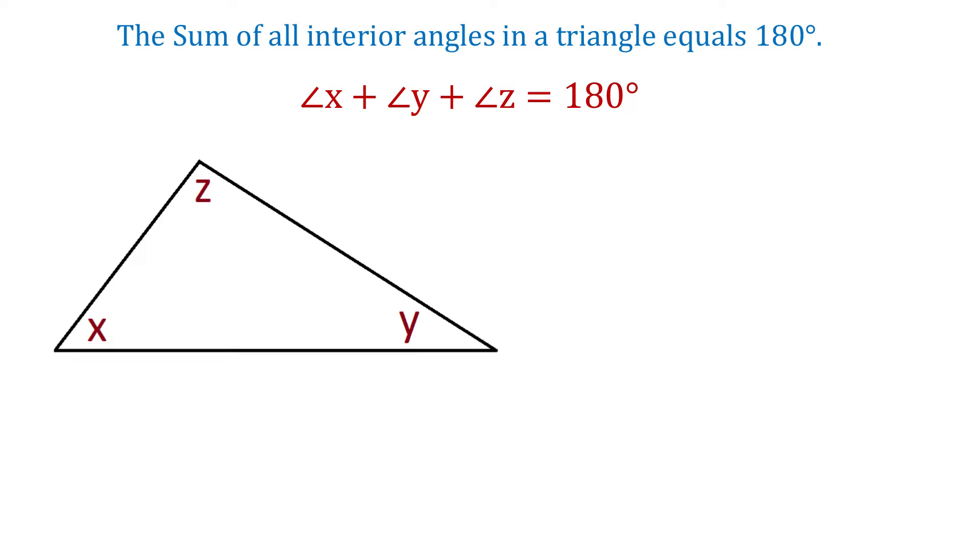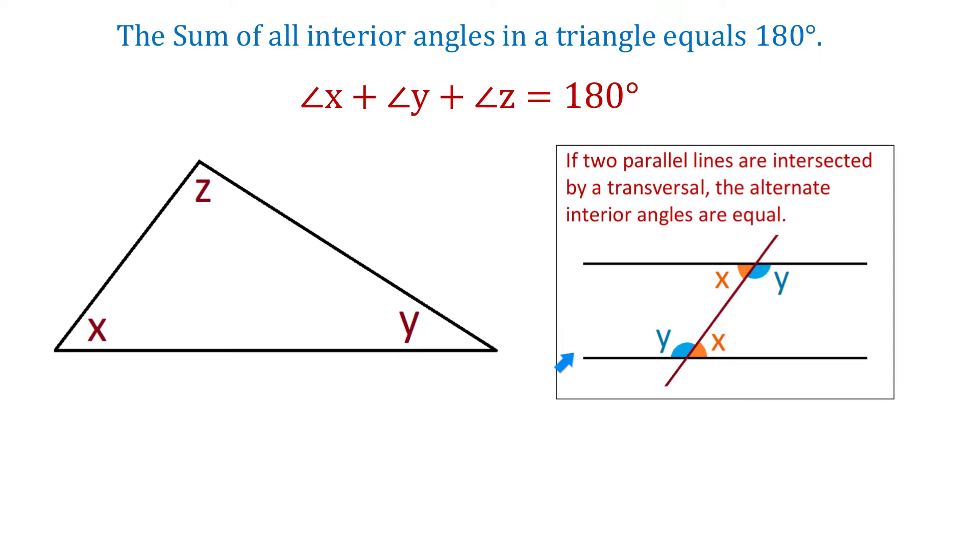For this we will review the following geometric principle. If two parallel lines are intersected by a transversal, then the alternate interior angles are equal.